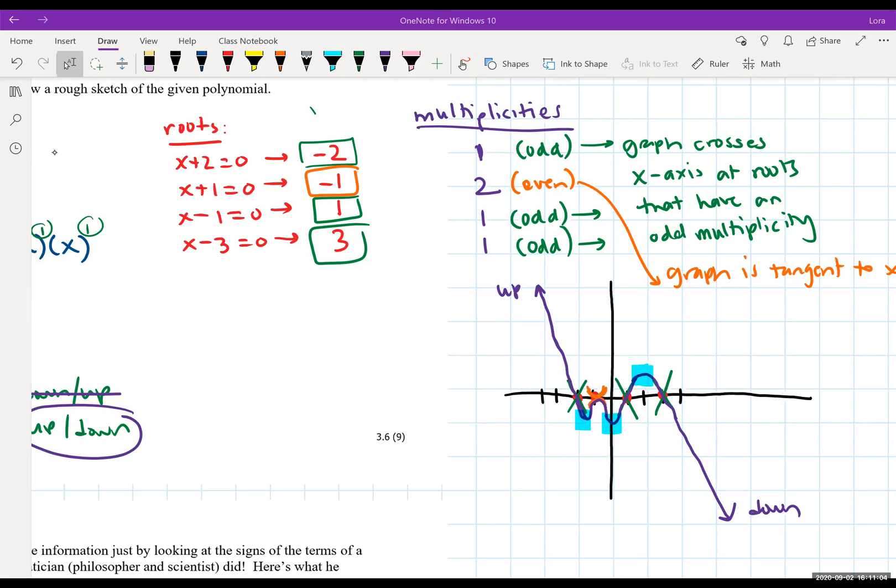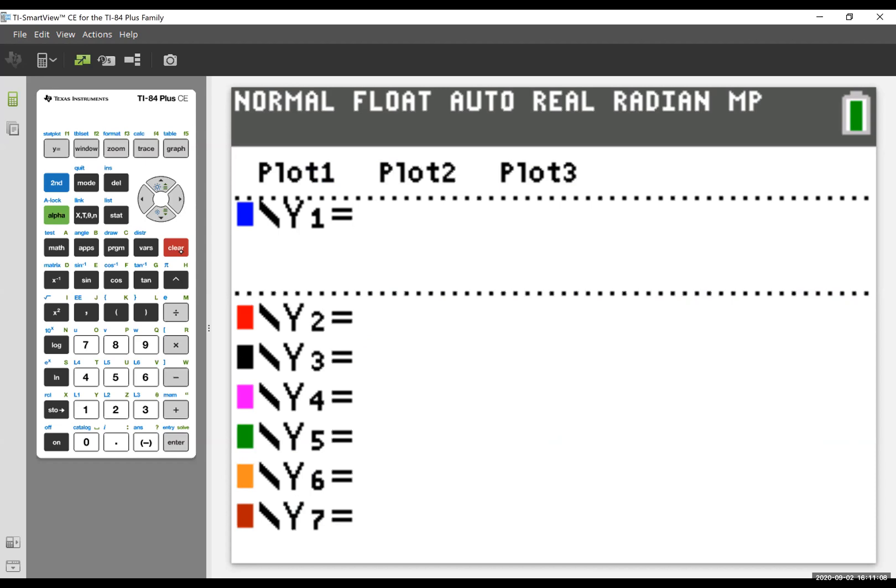I'm going to pull up the TI for us. I want to enter the polynomial in my function editor. I'll remind myself what we were actually looking at. I'm going to enter it in the factored form, no need to multiply anything out. So we have negative 2 multiplied by x plus 2, which then gets multiplied by x plus 1 squared, which then is taken to the power of 2. We then have x minus 1 times x minus 3. I press enter.